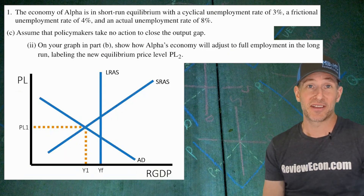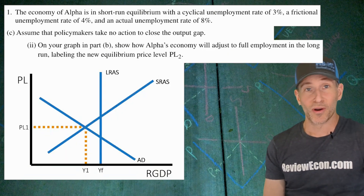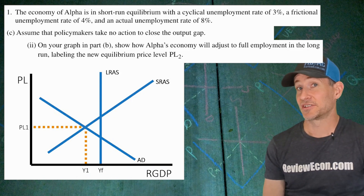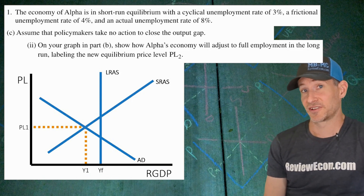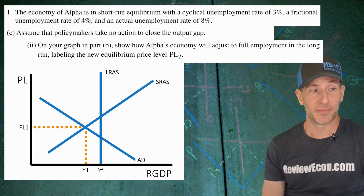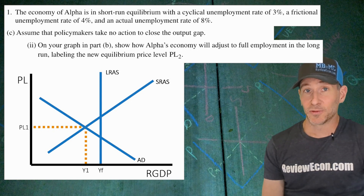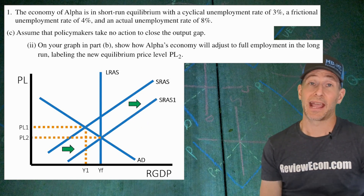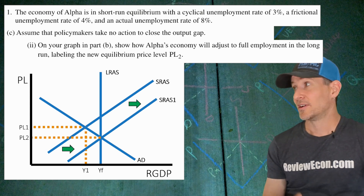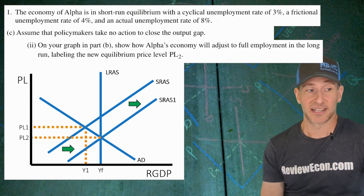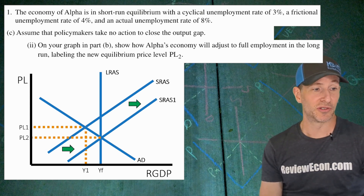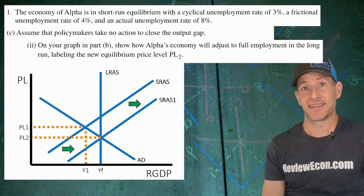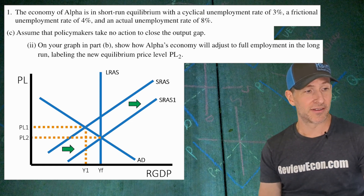On our graph from part B, we need to show that long-run change. The short-run aggregate supply curve is going to shift to the right until the current level of output equals YF. We shift that short-run aggregate supply curve and mark the new price level, which is a lower price level at PL2 — the new intersection between the SRAS and the AD curve.